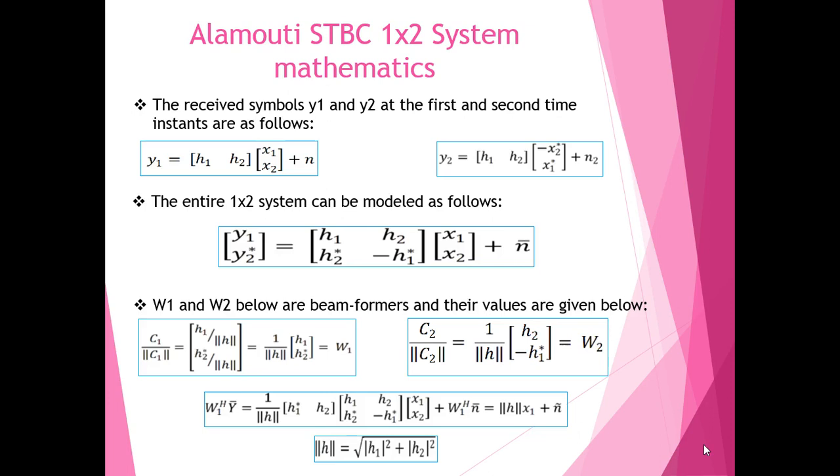Now, W1 and W2 are the beam formers. These are required for decoding the transmitting symbols of X1 and X2 respectively. Their values are also shown in this slide.